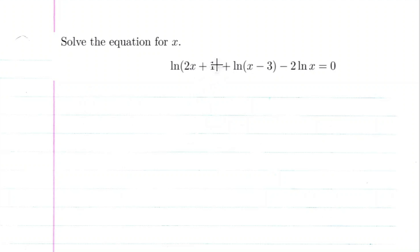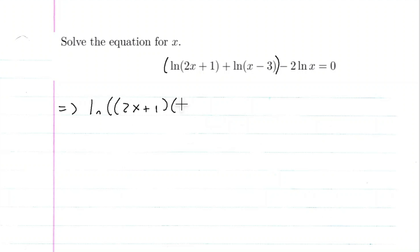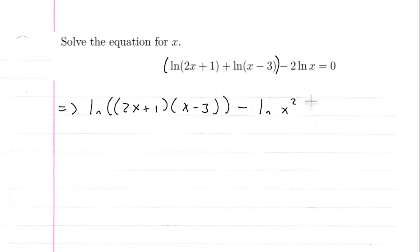First, I'm going to look at these two here and use the product rule of logarithms. So using the product rule, I know ln of (2x + 1)(x − 3). And then here I'm going to use the power rule — I can put this coefficient in the exponential spot — so minus ln x squared is equal to 0.